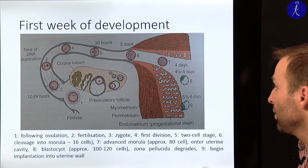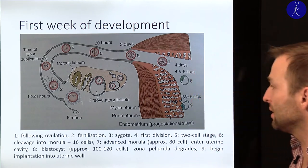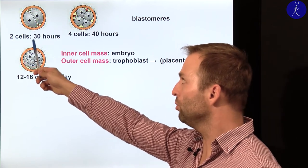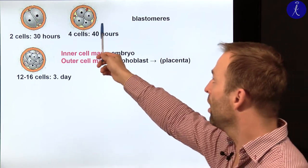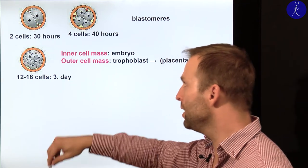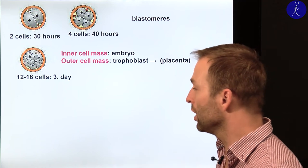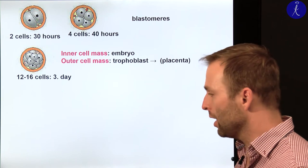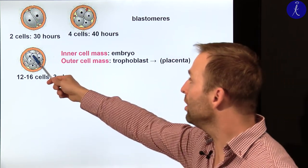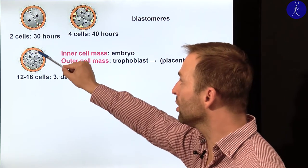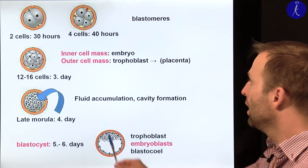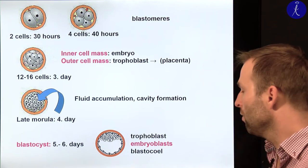Implantation is very important because that is when the actual pregnancy really starts. After fertilization, producing two cells takes about 30 hours; 40 hours after fertilization you have the four-cell stage, then eight, then continuing mitotic divisions you have 16, 32 and so on cells — this is the morula stage. The inner cell mass will produce the embryo and the outer cell mass will produce the trophoblast, which contributes to placenta formation. Late morula is day four; blastocyst is days five to six.